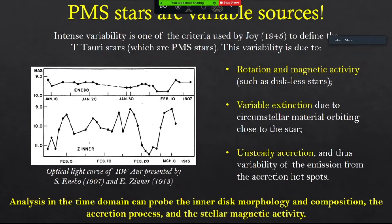One of the important properties of pre-main sequence stars is that they are variable sources. Variability was one of the properties used by Joy in 1945 to define the new class of stars called T Tauri stars, which are a subclass of pre-main sequence stars. For instance, I show very old light curves — more than one century old — in which, despite the low time resolution, you can appreciate the strong variability of these sources in optical.